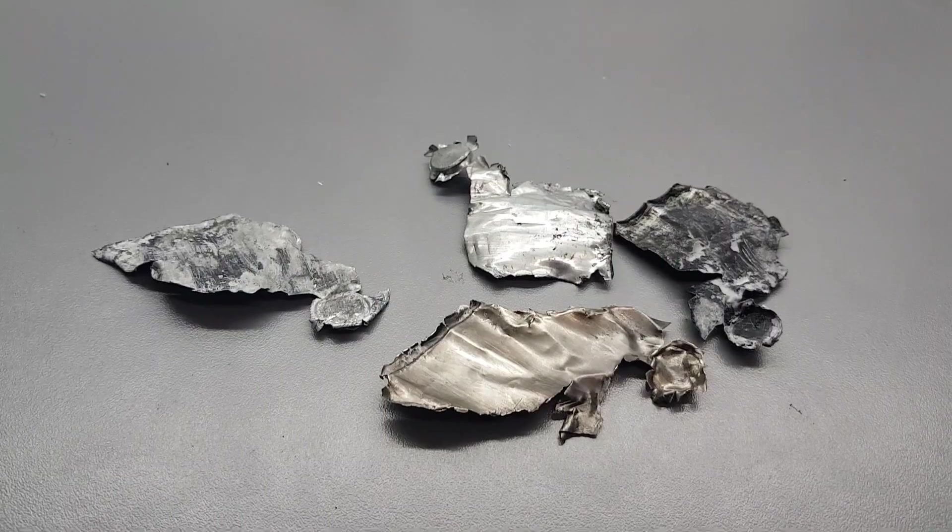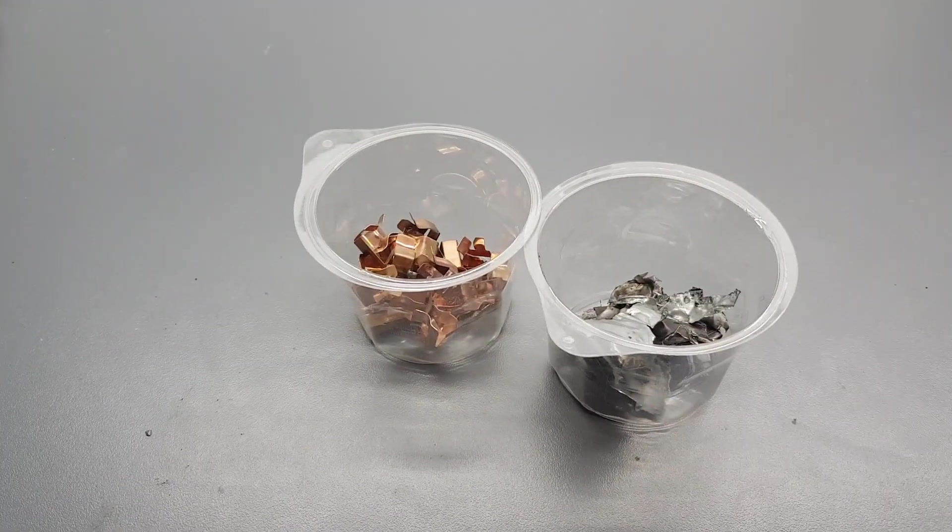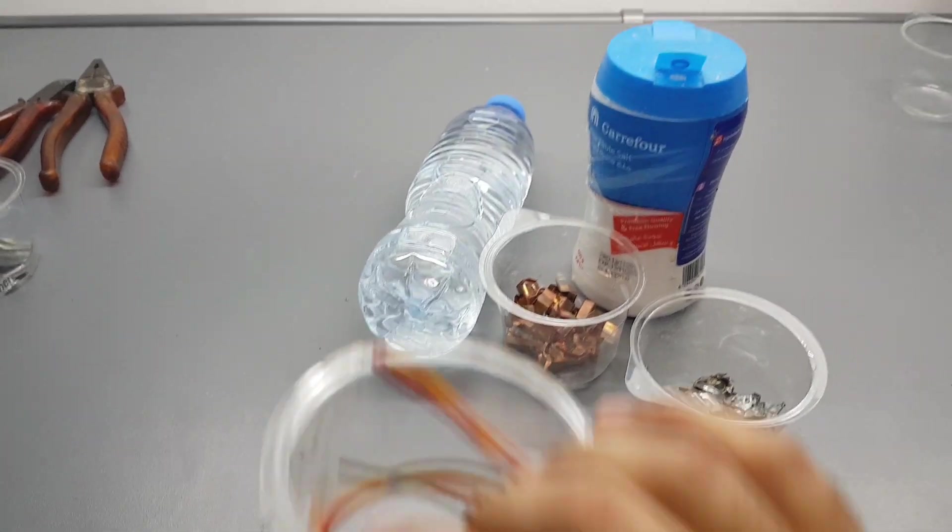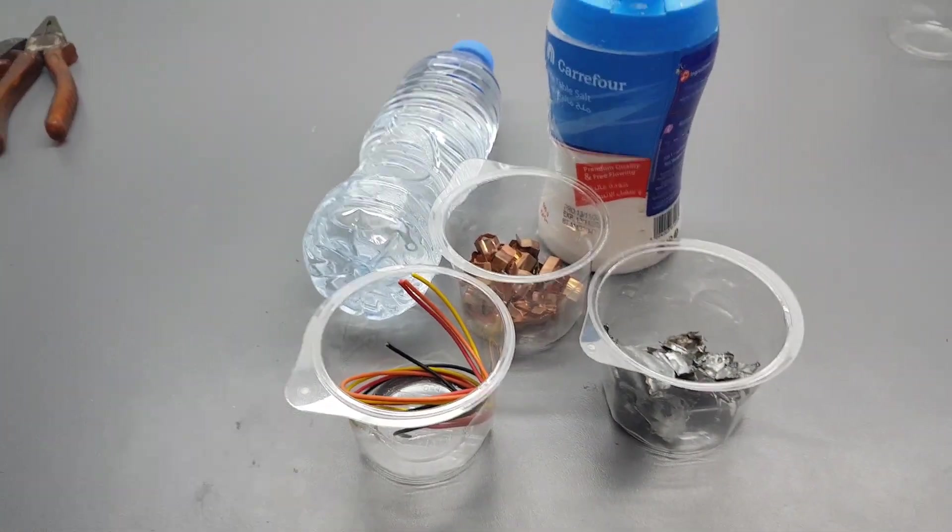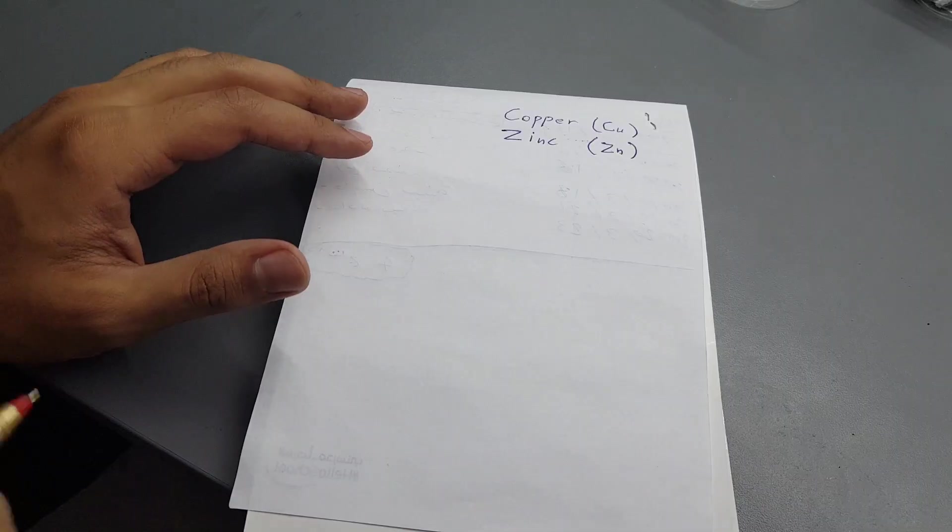And finally we have zinc. So now we have copper, zinc, salt, water, and small wires, and this is all what we need to make a battery, I guess. Yeah, so let's do it.